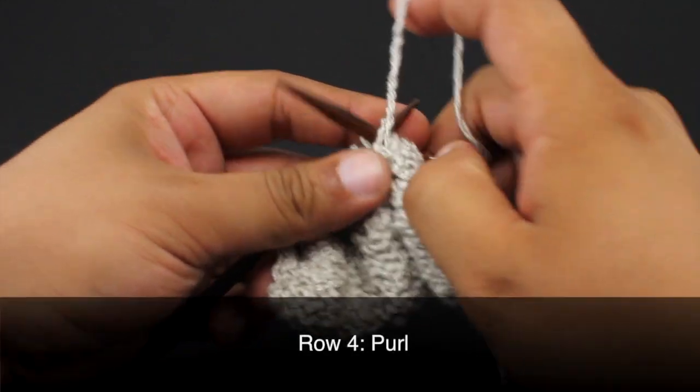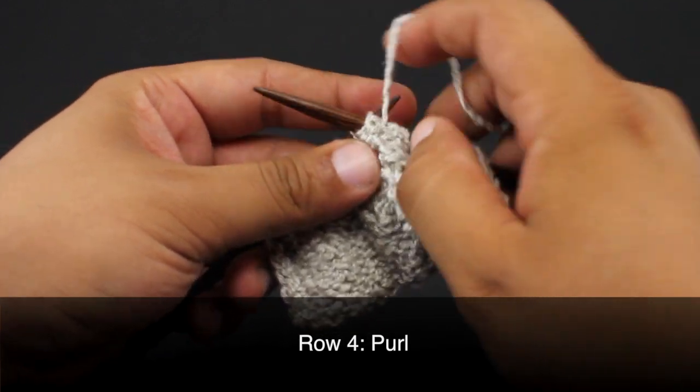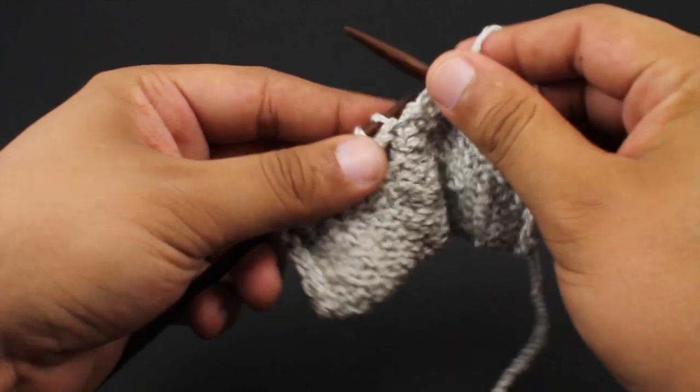Row four: we're going to purl all stitches. Repeat rows one through four until you've reached your desired length.